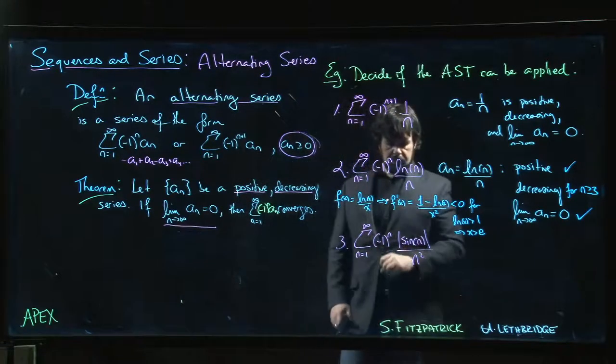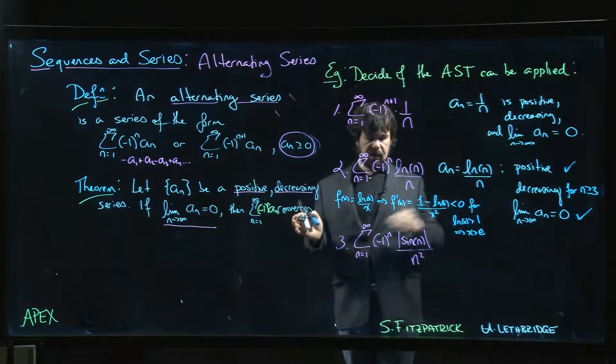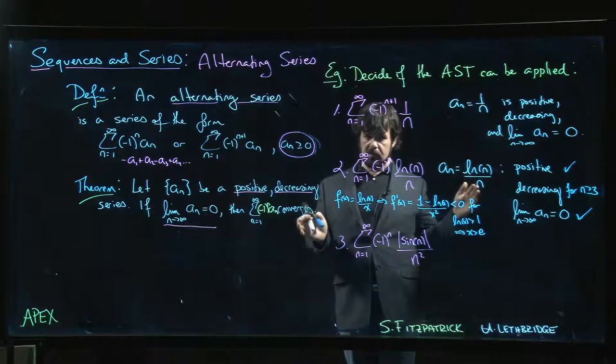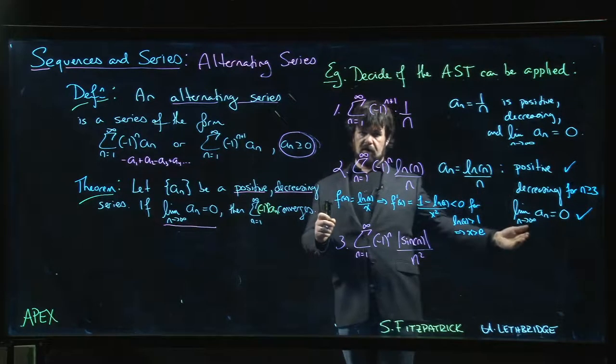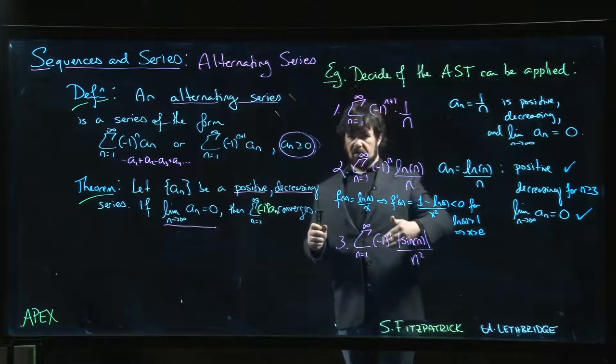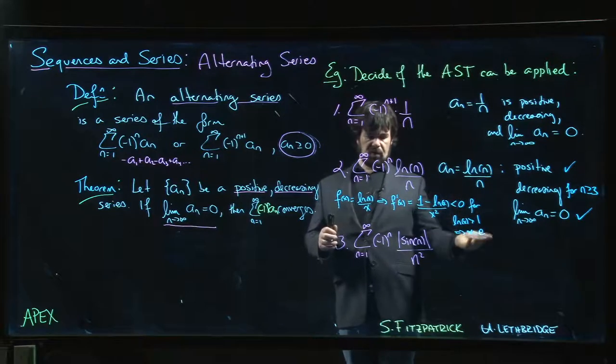But it's not decreasing. The terms are not decreasing because sine of n is going to oscillate between zero and one. It's going to take values between zero and one and keep doing that forever. As n goes off to infinity, there are going to be values that are close to one, values that are close to zero. So it's bouncing around on us, it's not strictly decreasing, and there's no way to make it strictly decreasing.